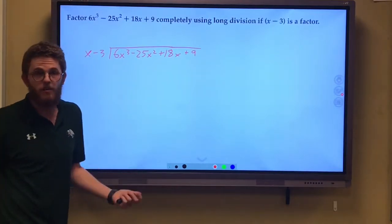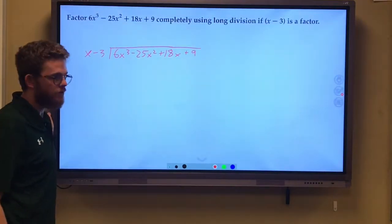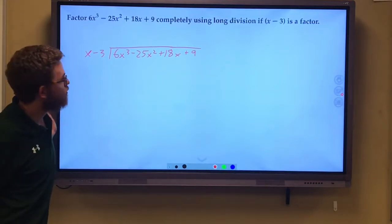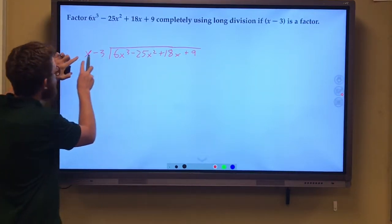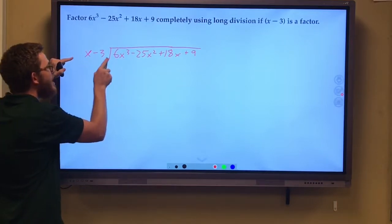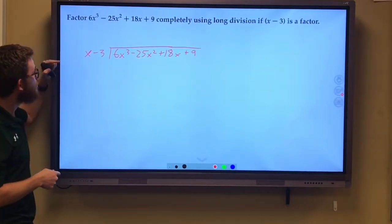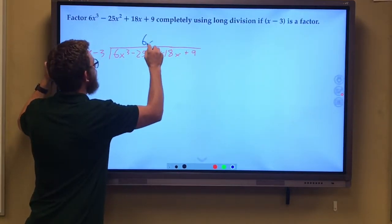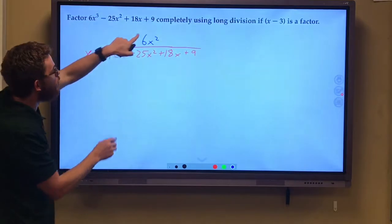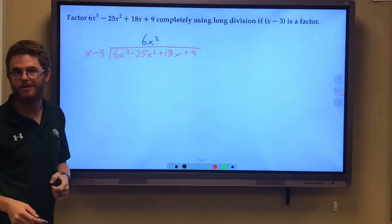Long division. Set it up like long division. Good old long division that you saw back in 6th grade or whatever it was. And we look at this first term. What times x gives us 6x cubed? 6x squared. And I'm going to write 6x squared right here because I'm going to put it in line over my x squared.